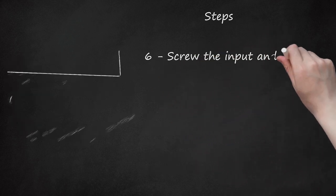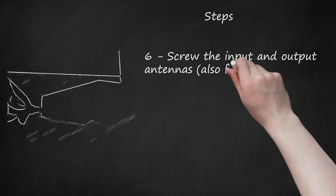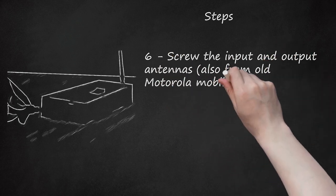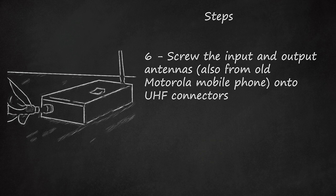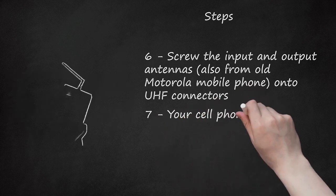6. Screw the input and output antennas, also from old Motorola mobile phone, onto UHF connectors. 7. Your cell phone jammer is ready.